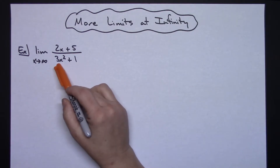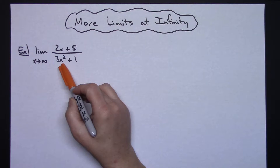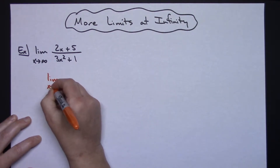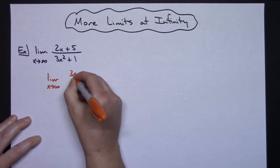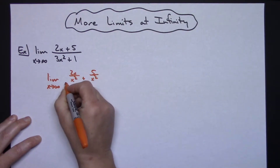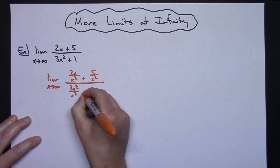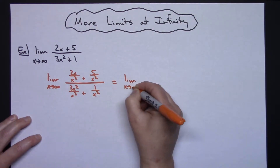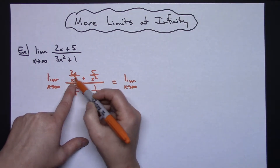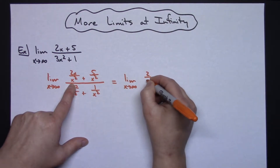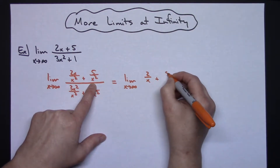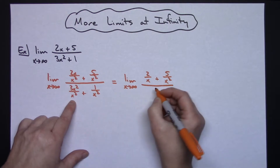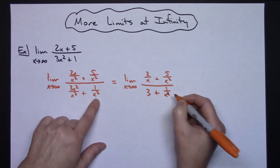The highest power of x in the denominator is x squared, so I can divide through by that. I rewrite this as the limit as x approaches infinity of: (2x/x² + 5/x²) all over (3x²/x² + 1/x²). Going through and simplifying, 2x/x² becomes 2/x, 5/x² stays as 5/x², the x squared terms in the denominator cancel leaving 3, and 1/x² cannot be simplified.